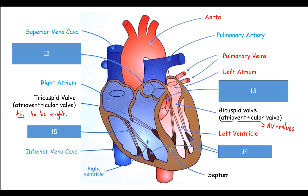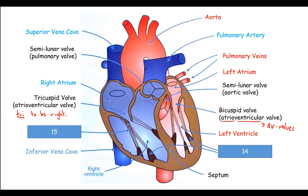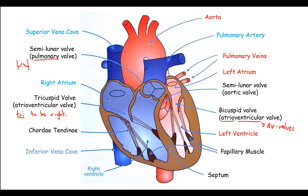Numbers twelve and thirteen are the semilunar valves — called semilunar because they are crescent-shaped, like the shape of a half moon. The semilunar valve leading into the pulmonary artery is sometimes called the pulmonary valve, and the one leading into the aorta is the aortic valve. Number fourteen is the papillary muscles, found within the walls of the ventricle, and number fifteen is the chordae tendineae, sometimes known as the heart strings. The heart strings attach to the valves — we'll look at those in more detail later.